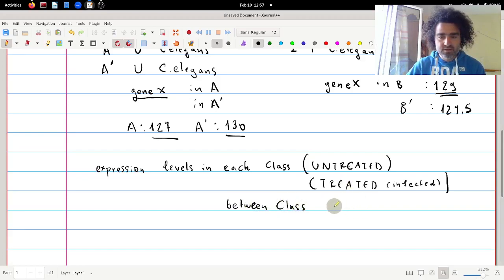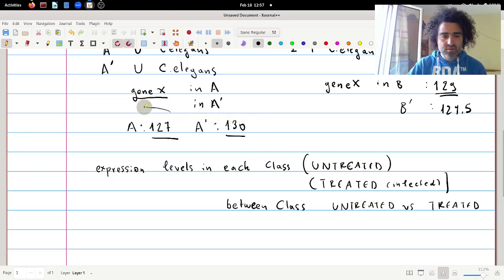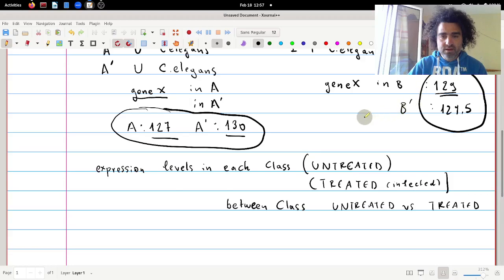So this is untreated versus treated. So the comparison here is within each class, and here is between each class. If we want to compare these two values, we need to know somehow the variance that we have within each class, and then compare what we observe in one class versus what we observe in the other class.